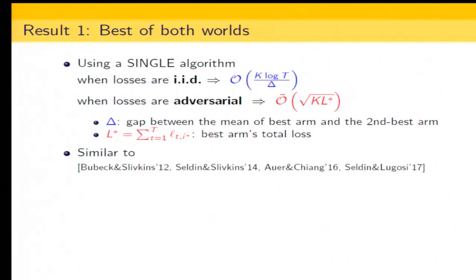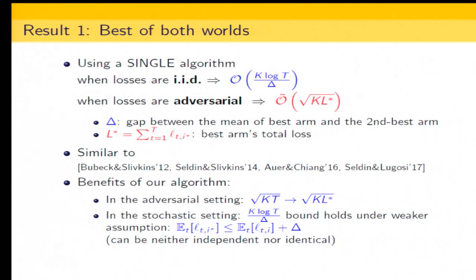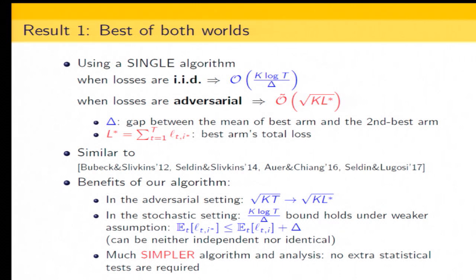We are not the first to investigate this problem — there were already several works achieving best-of-both-worlds bounds. But we have several benefits over previous works. In the adversarial setting, our bound is better than the minimax bound square root K T. In the stochastic setting, the logarithmic bound holds under a weaker assumption than IID — we only need that there exists an arm I-star whose conditional expectation of loss is smaller than all others by a gap, so the losses can be neither independent nor identical. Perhaps the most important contribution is that we have a much simpler algorithm and analysis.